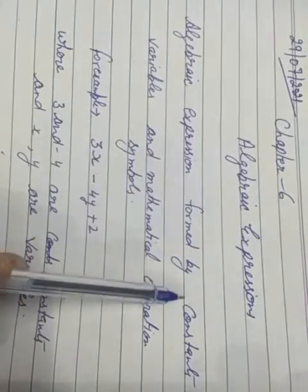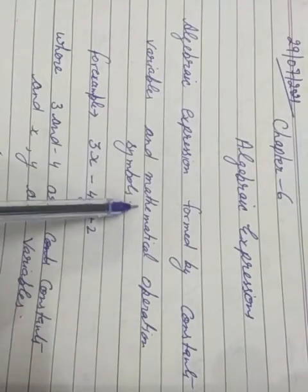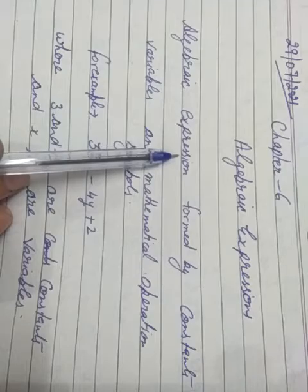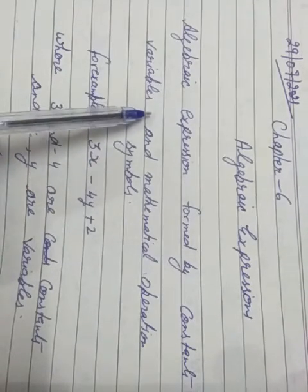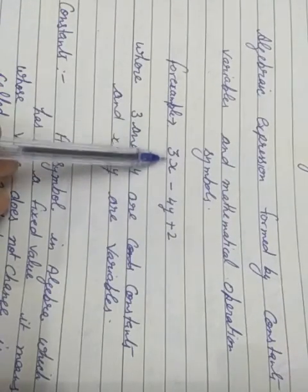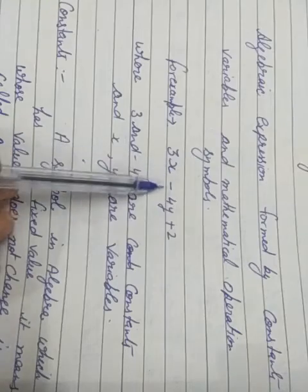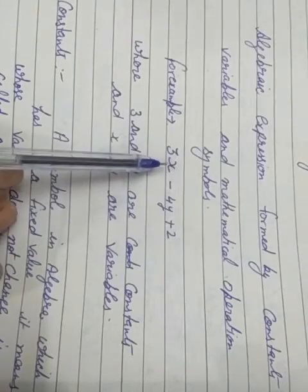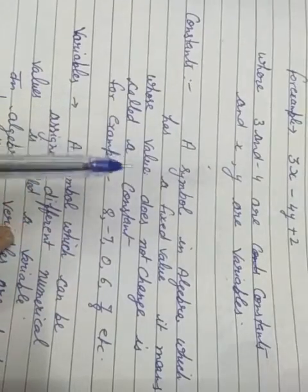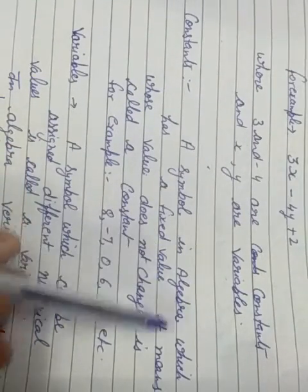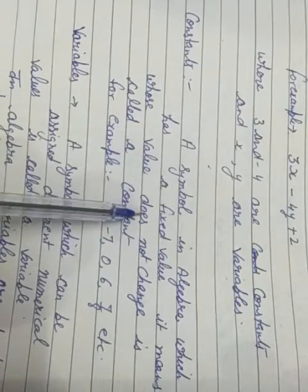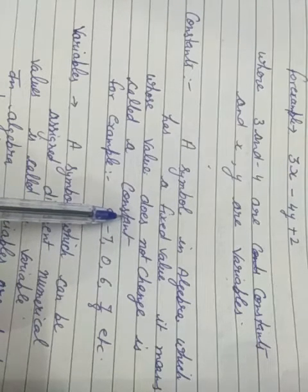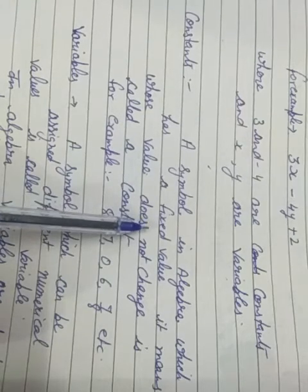That is, algebraic expressions are made up of variables, constants, and plus-minus signs. Now the question arises: what are constants and what are variables? For example, in the algebraic expression 3X - 4Y - 2, where 3 and 4 are constants and X and Y are variables. A symbol in algebra which has a fixed value — whose value does not change — is called a constant. Numeric values are called constants.